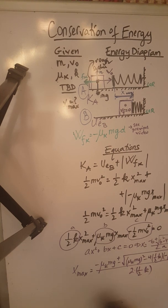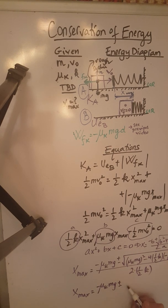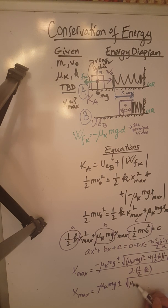So let's just simplify this a little bit to make it look a bit nicer. We're going to end up with two possible expressions for x max: negative mu K M G, plus or minus square root,